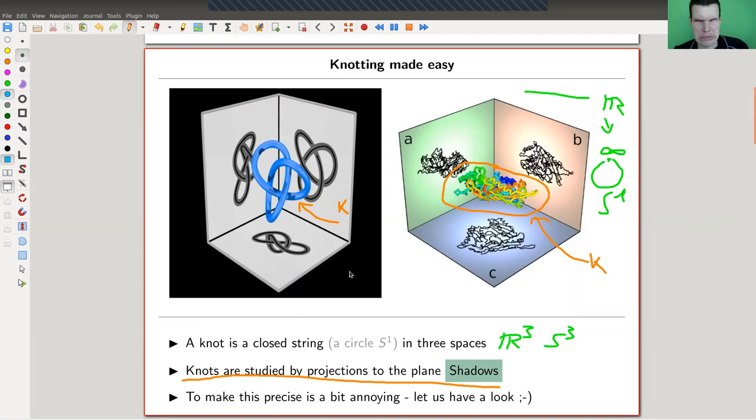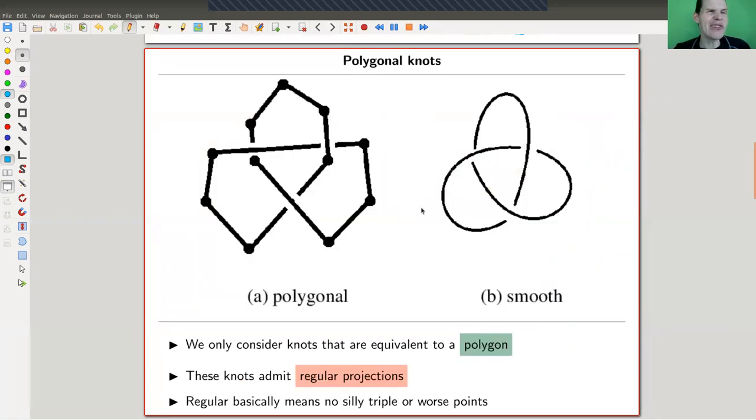So making knots precise is a bit annoying. So let's have a look. It's not so bad as long as you don't want me to prove anything because that's a bit annoying, as I said. It's not hard, but it's annoying. So basically what you need to do, because we are doing topology and there are just some crazy counterexamples everywhere, just like everywhere counterexamples, a knot is just an embedding of S1 into three space, the circle into R3, but that's not quite what you want to do. You get some crazy counterexamples that I'm going to show you on the last slide. What you rather would like to do is, and that's what we will do in this video series, we only consider knots that are equivalent to a polygon.